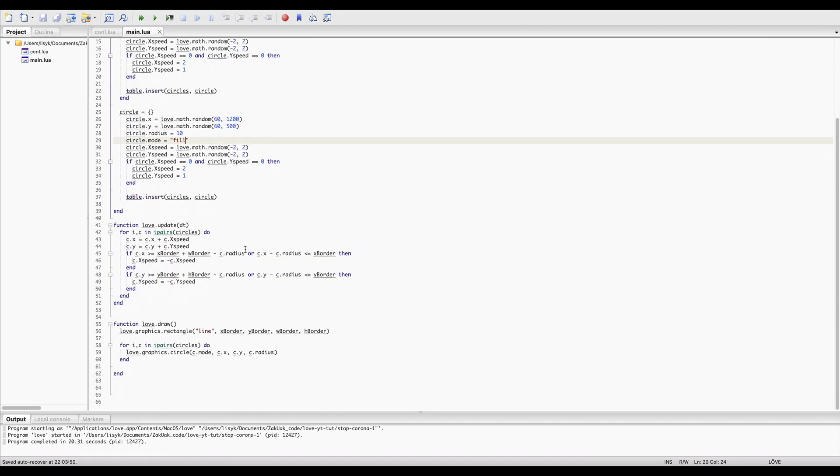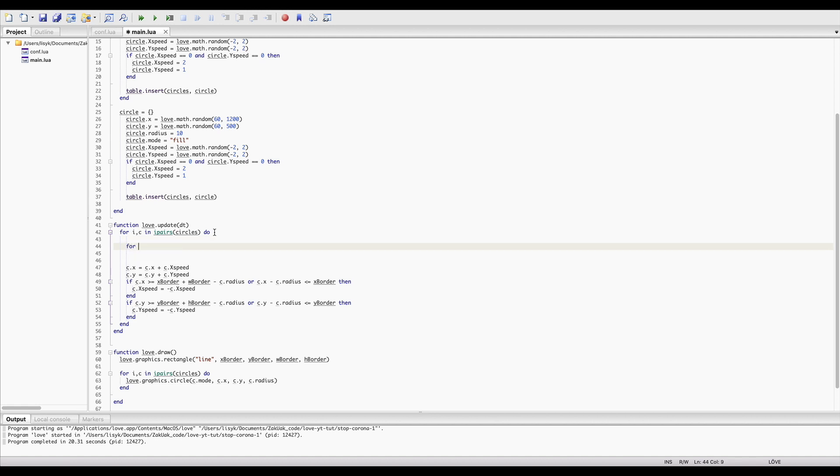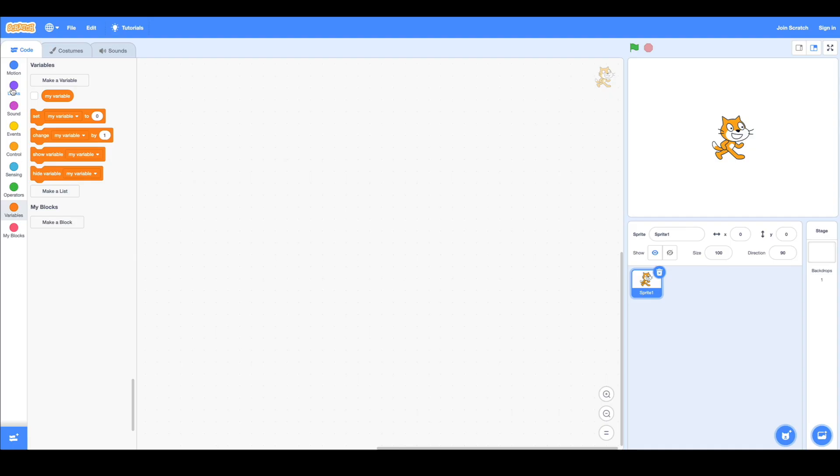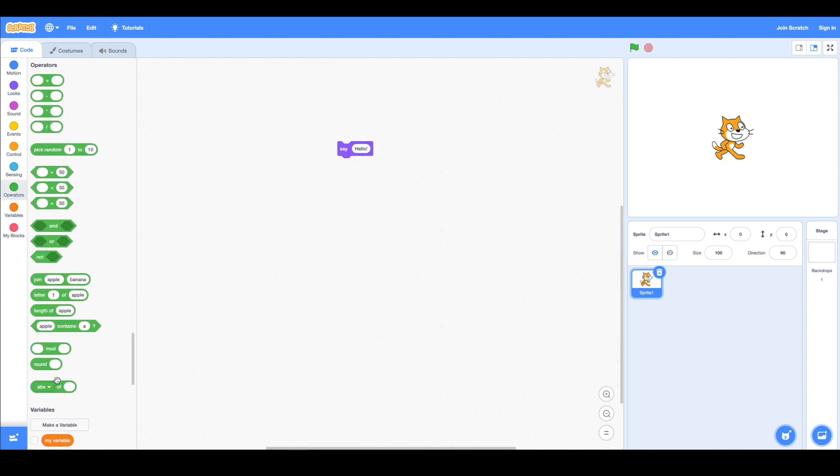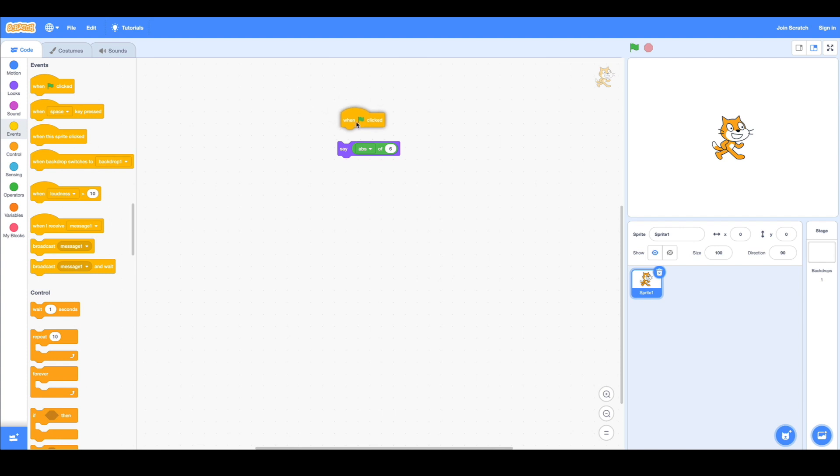Now, let's add the collision detection part. To do so, we compare circle positions. And here, our Scratch knowledges help us again. Because I'm going to use math absolute function, which works exactly the same for Scratch, as in Love 2D, and Lua. All right.